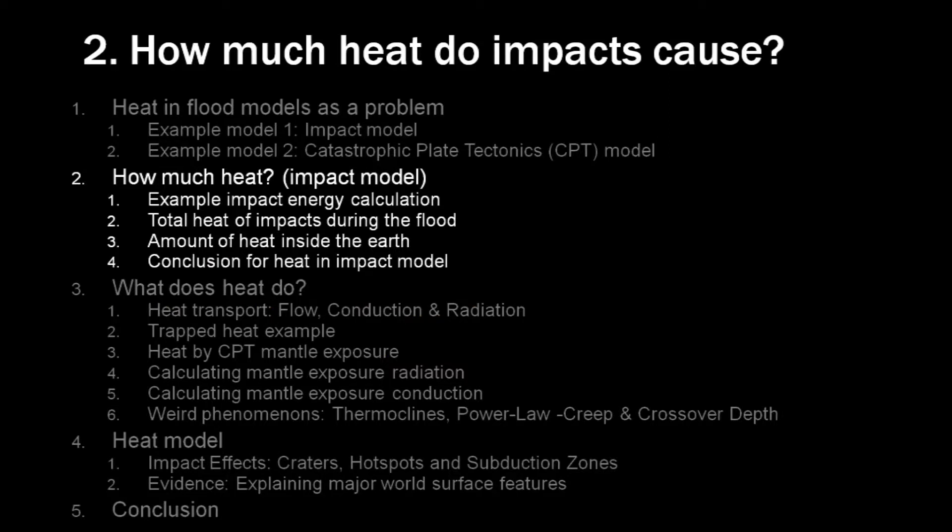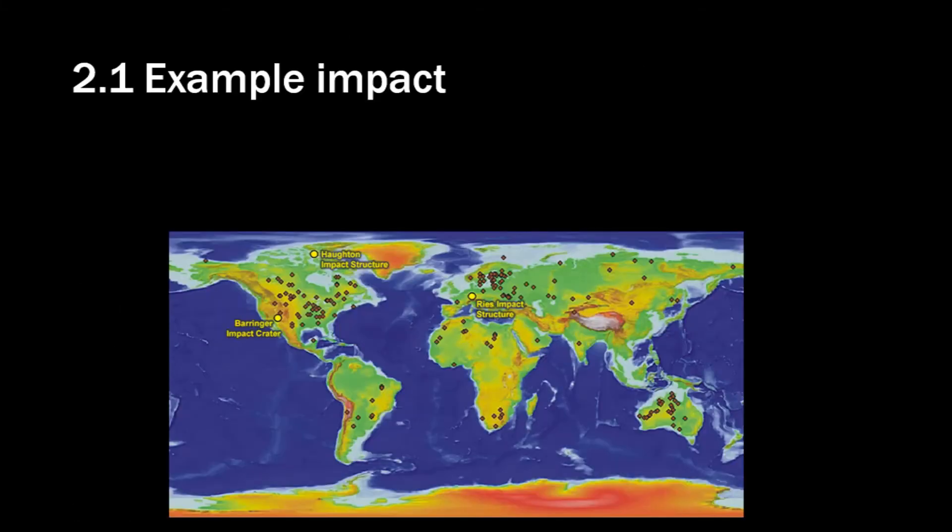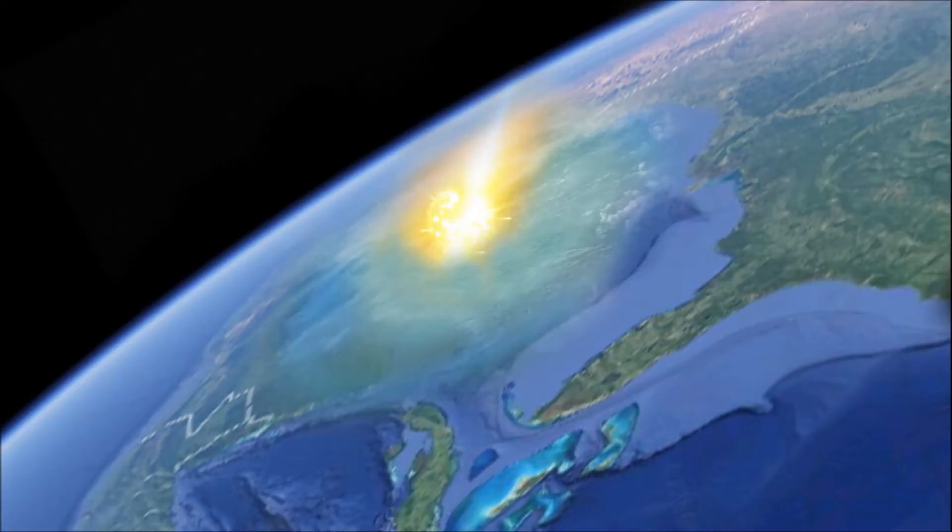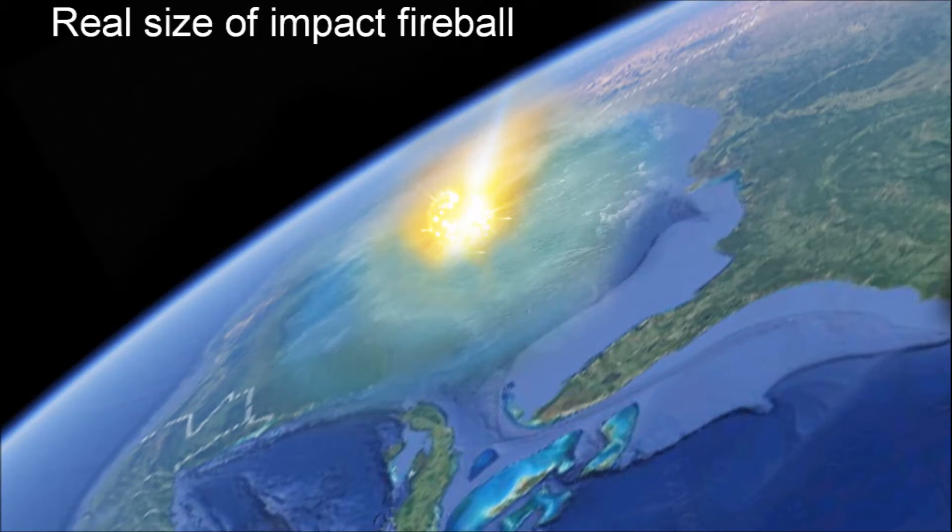Hence the heat problem for Genesis flood models. But next, let's do some calculations. Let's see how much heat is involved here. It is very well possible to calculate the heat involved in the crater formation. We'll take the famous Chicxulub crater for an example. This crater is supposedly the impact that killed the dinosaurs 65 million years ago. This is an illustration of the real size of the fireball that would be formed during such a large impact.